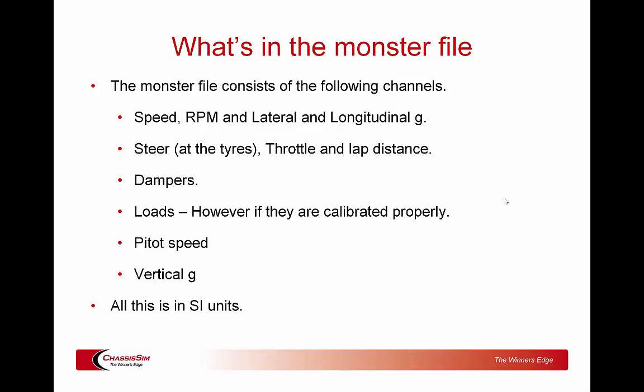In terms of units: speed is in kilometers per hour, RPM is unitless, lateral and longitudinal G is in G, steer is in degrees at the tires. For dampers, we're talking strict SI units — dampers in millimeters, loads in kilogram-force. Some might say loads should be in newtons, but kilogram-force is how everything is set up. Accelerometers are in Gs and steer is in degrees. Stick to that and you cannot go wrong.